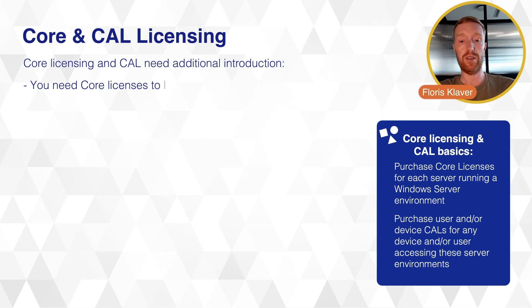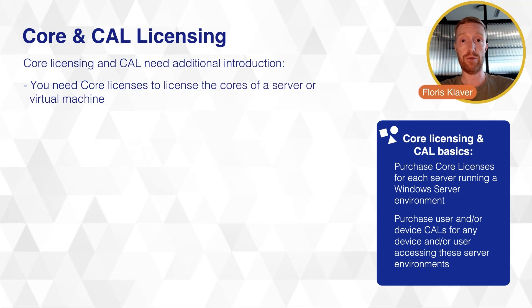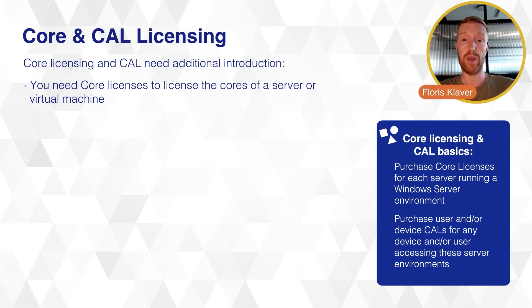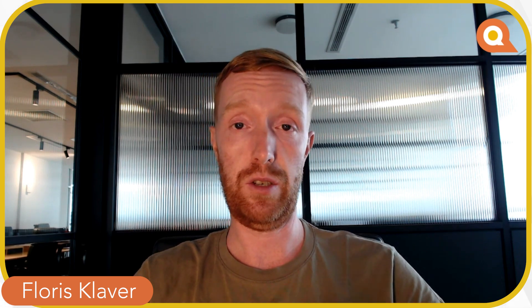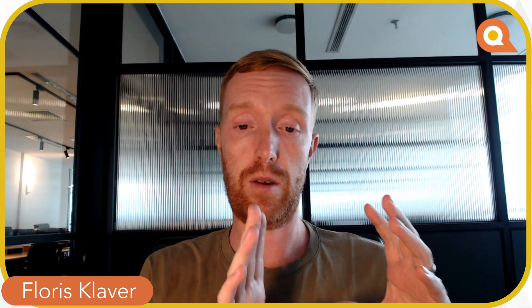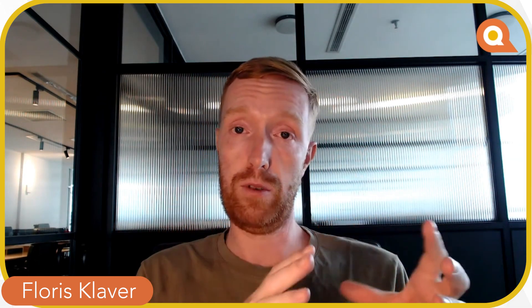Core licenses are needed to license the cores of a server — a physical server or a virtual machine. The virtual machine part is particularly interesting because Microsoft made changes in October 2022, where it used to only be possible to license physical server machines with core licenses (with virtualization rights). However, since many organizations worldwide make heavy use of virtual machines — either hosting them themselves or through a third-party hoster — Microsoft also made it possible to license on a virtual machine basis. We will cover these differences in the coming slides and videos.